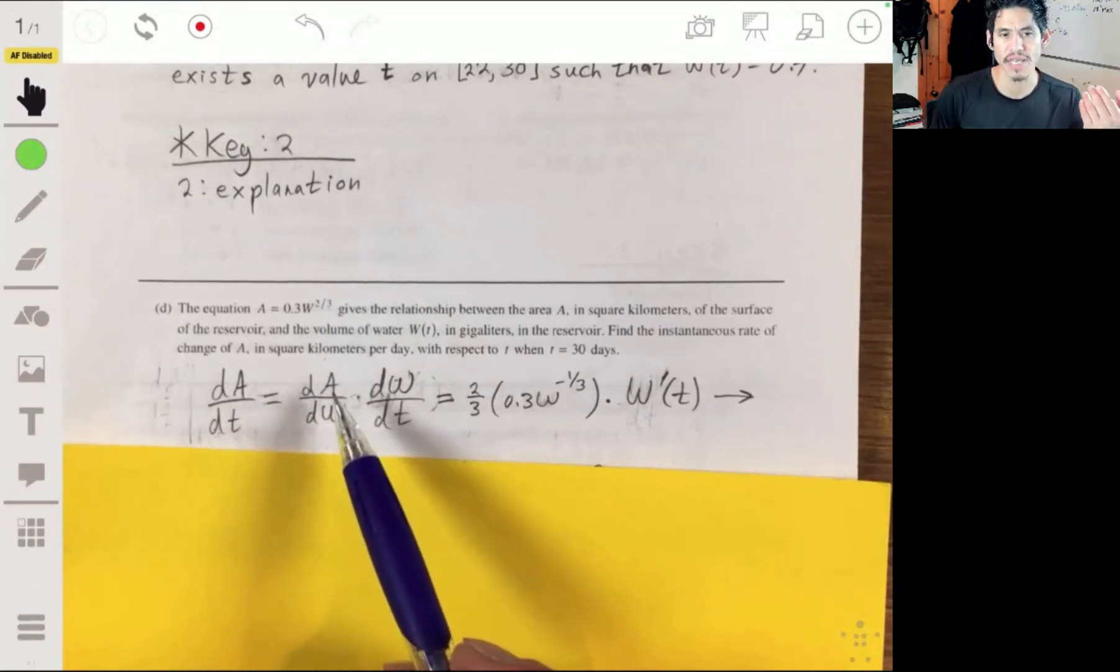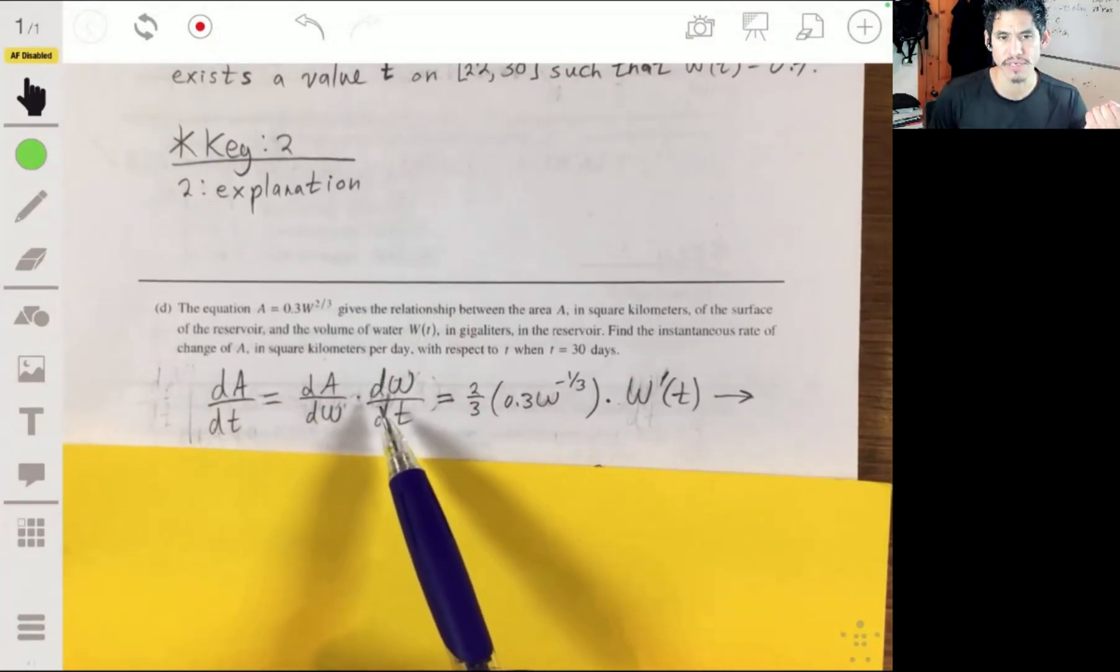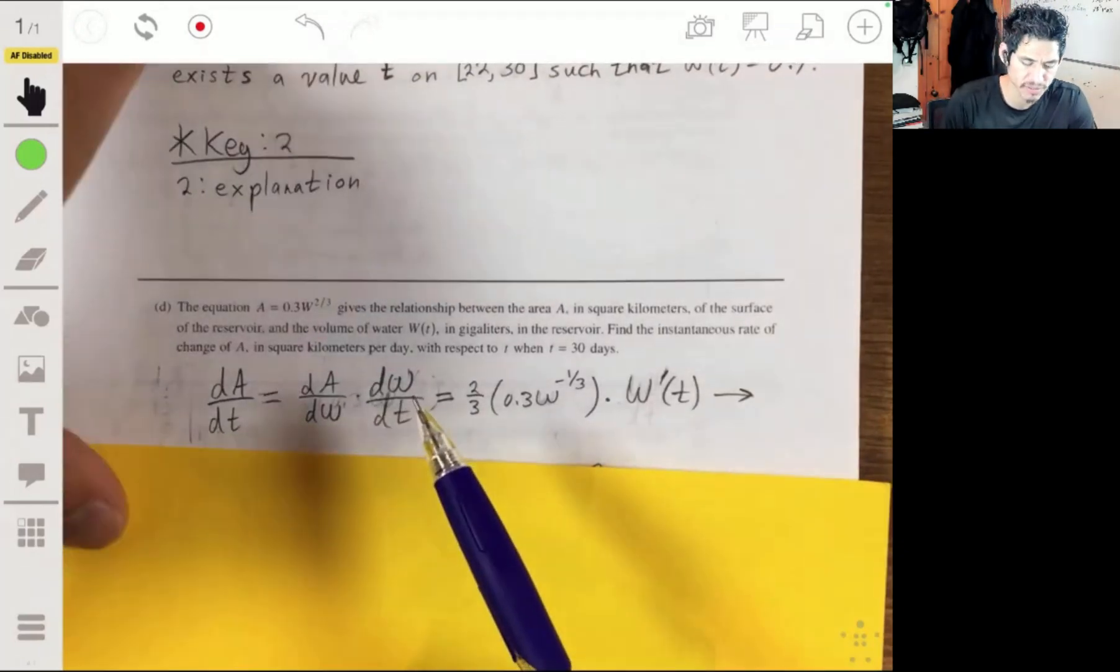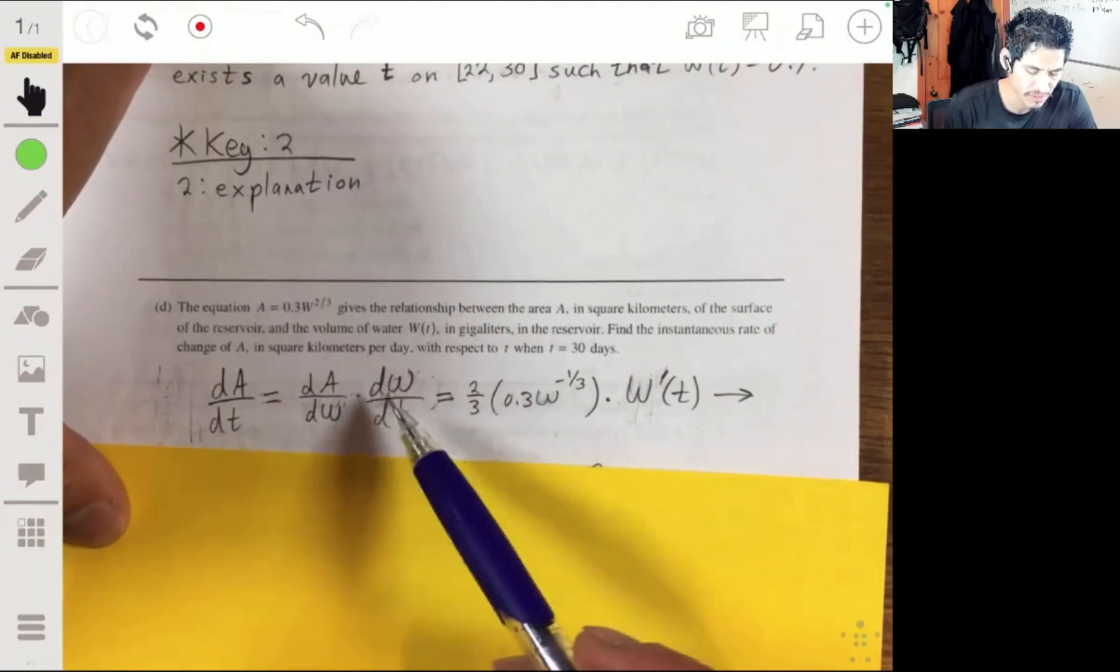So da/dt is equal to da/dw times dw/dt. The chain rule is here. And that's really it. That's the part students overlook or make that mistake.